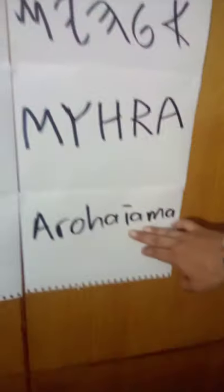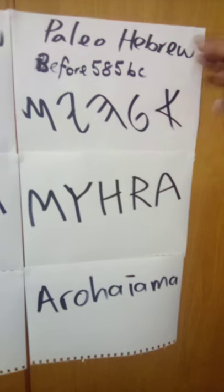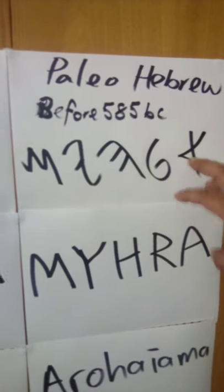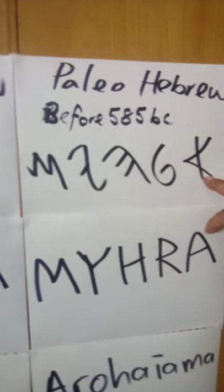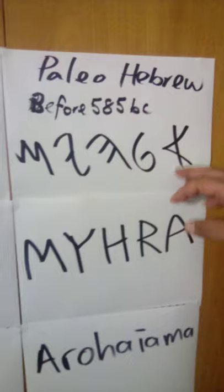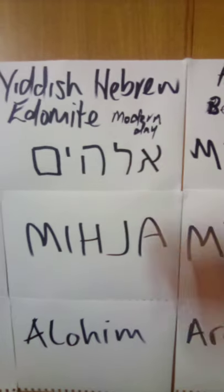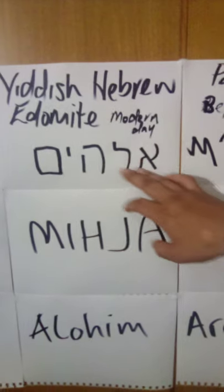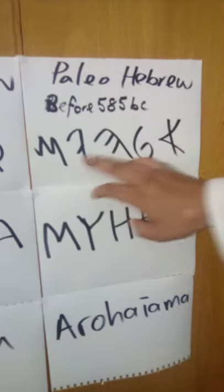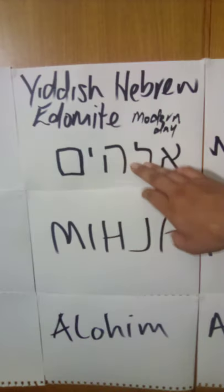'Aroha ya ma' means gods — plural, it means gods. This is the mother tongue of the Hebrew Israelites, so I suggest you Maori, if you speak Te Reo, use this language here but say it in Te Reo — not like the Edomites. 'Aroha ya ma' — and that is God. It's not God's name, it's just that: that is God.